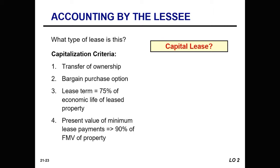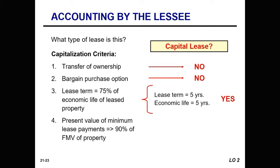What type of lease is this? Let's look at the capitalization criteria. Is there a substantial transfer of ownership? No — the loader reverts back to Caterpillar. Is there a bargain purchase option? No. Does the lease term equal 75% or more of the economic life? Yes — five years is 100% of the five-year economic life. Is the present value of minimum lease payments equal to or greater than 90% of the fair market value? Yes — the present value is $100,000 and the fair market value is $100,000. We have met two of the criteria for capitalization; therefore, this is a capital lease.